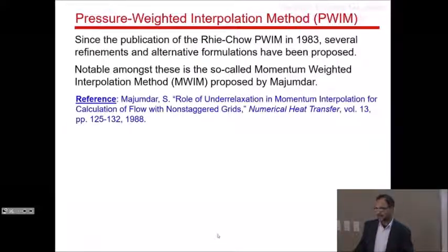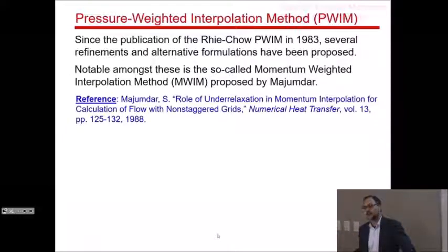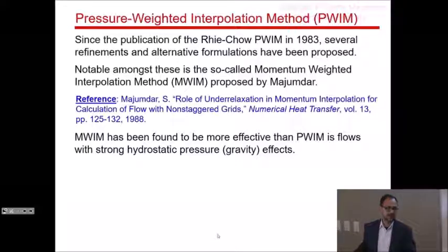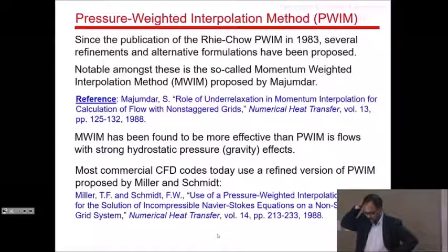The MUIM method was proposed by a researcher from the University of Karlsruhe in Germany. It is used quite a lot, especially in areas related to civil engineering, hydrodynamics, water flow around ships, and similar applications where body forces are very important. MUIM has been found to be more effective than PUIM in flows with strong hydrostatic pressure effects. But most commercial CFD codes today use PUIM, and a slightly refined version of it.